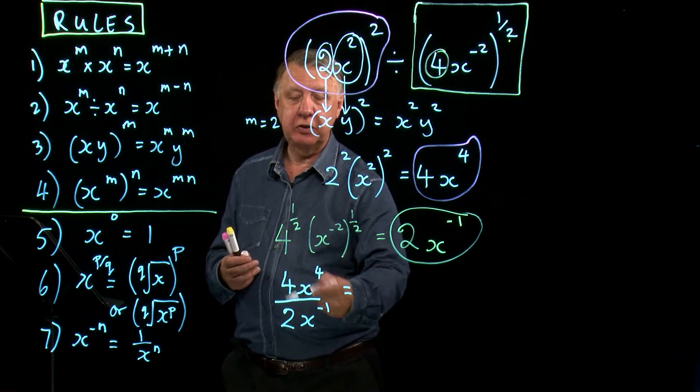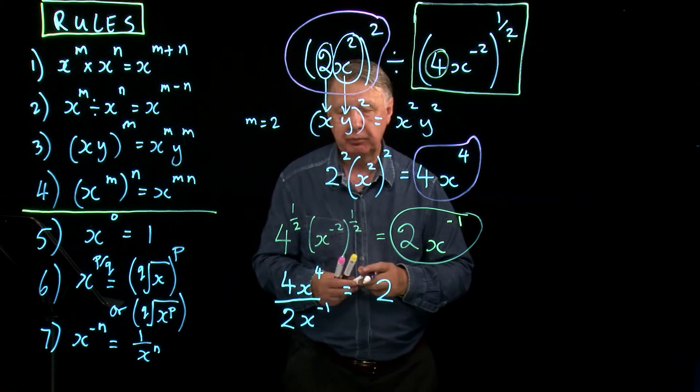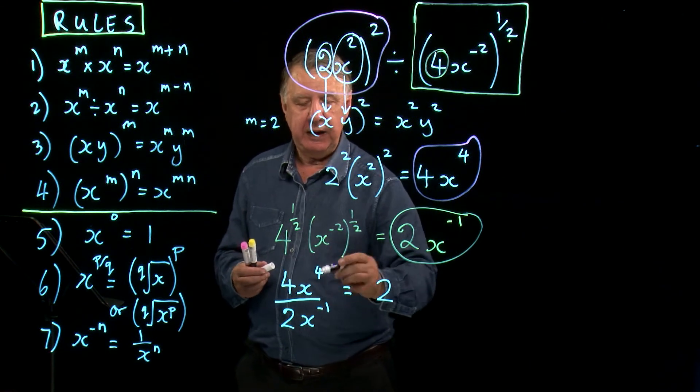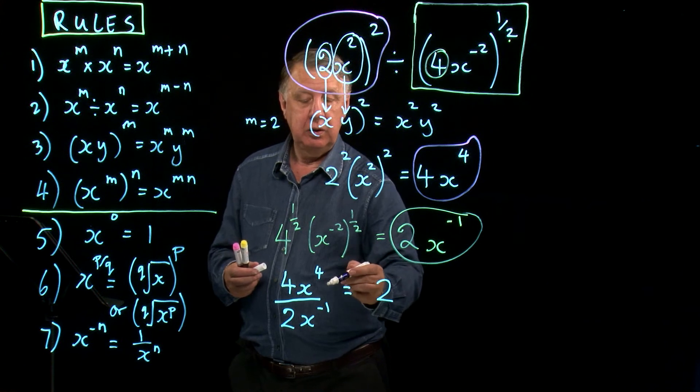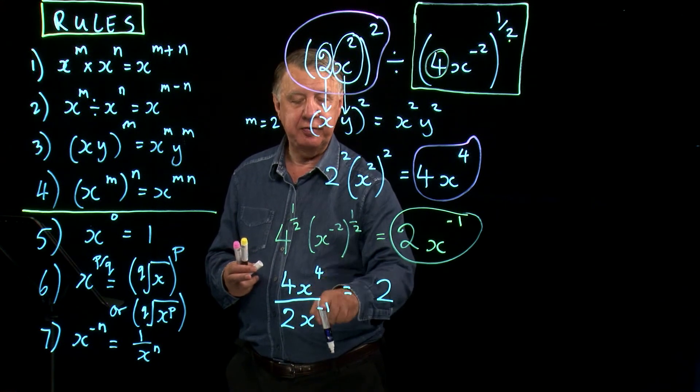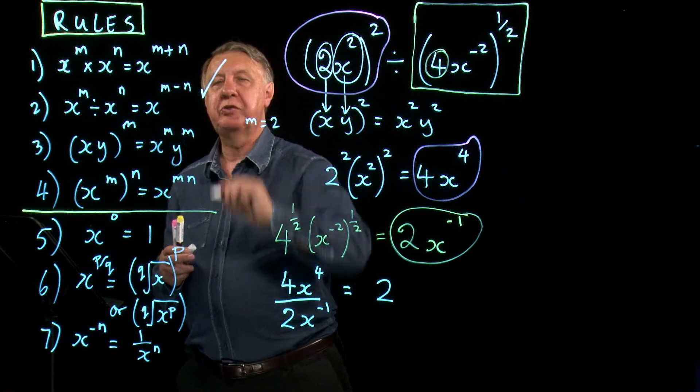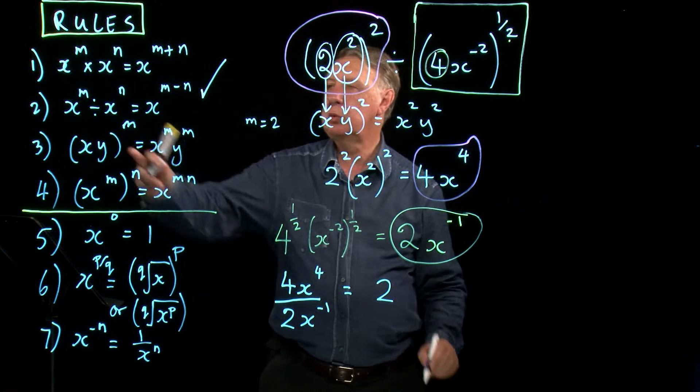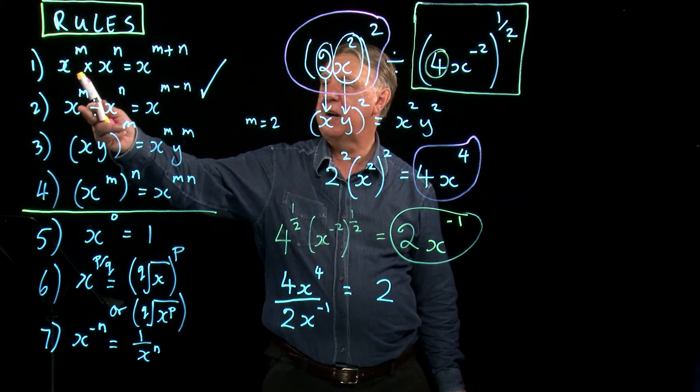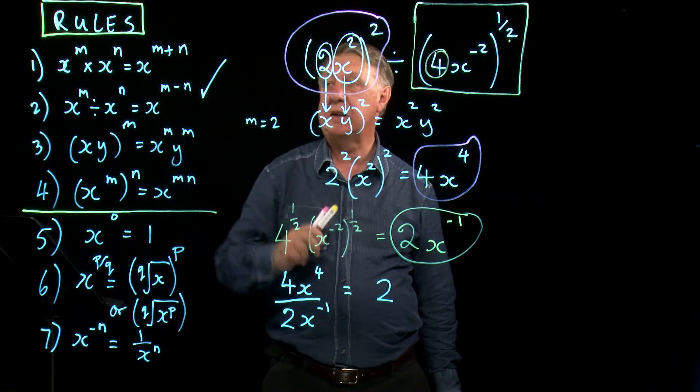So 4 over 2, well that's 4 divided by 2, which is 2. Now look here. x to the 4 divided by x to the minus 1. I now need a rule for division of powers. Well I've got that, it's rule 2. And rule 2 says if I divide a power by another power, I subtract the powers.